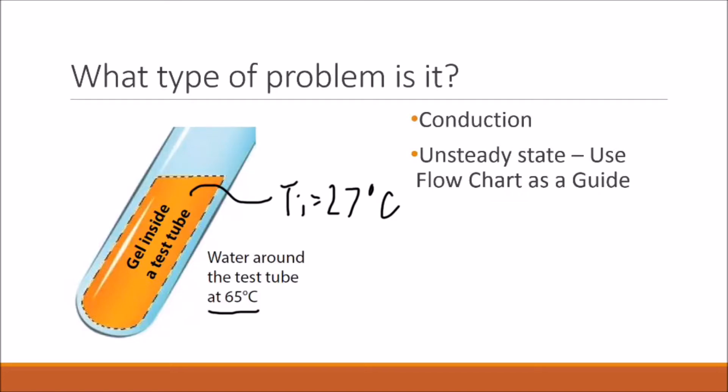So we're dealing with some type of conduction problem. We're also told in the problem to find a time for heating to take place. Any time we're asked to find a time for something to happen, we cannot assume steady state. So this is an unsteady state problem, and we can use our unsteady state flow chart to help us with this problem formulation.